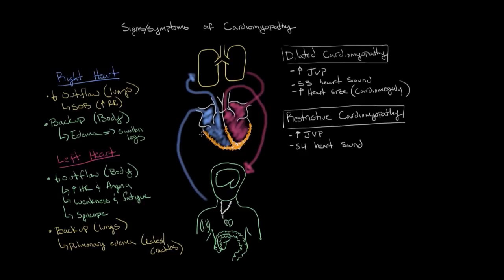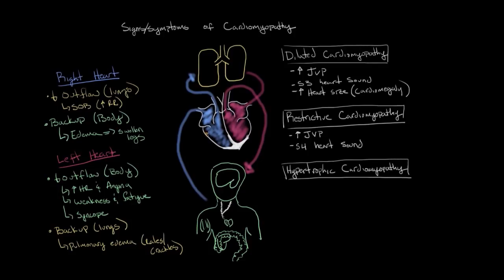Now let's move on to the last type of cardiomyopathy: hypertrophic cardiomyopathy. In hypertrophic cardiomyopathy, you get a similar effect as in restrictive cardiomyopathy where the walls aren't as stretchy, but in hypertrophic, the walls get really big. The name itself tells you this — when a cell becomes hypertrophied, it means it gets bigger. So let's make these heart muscle walls a lot bigger.